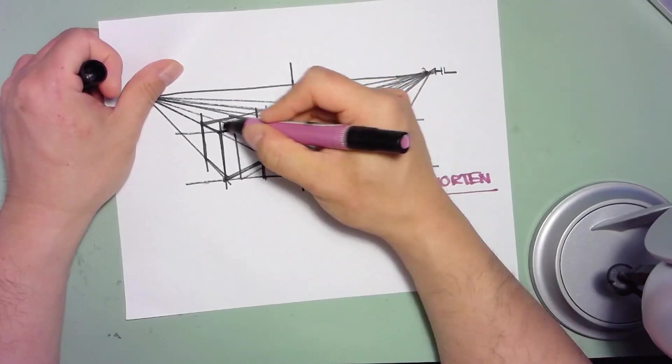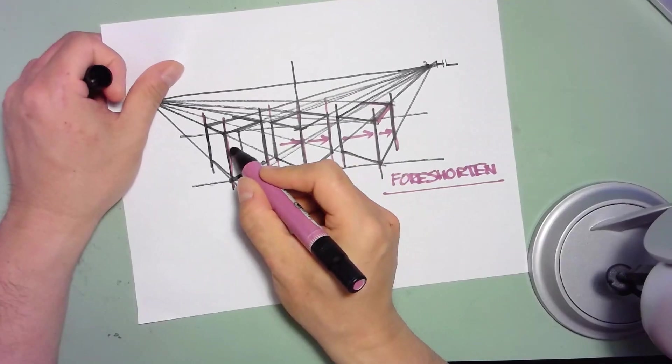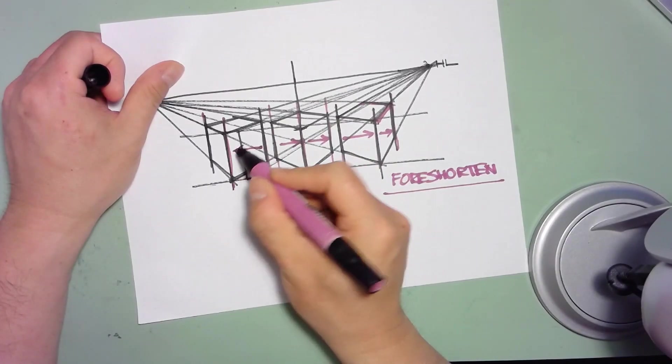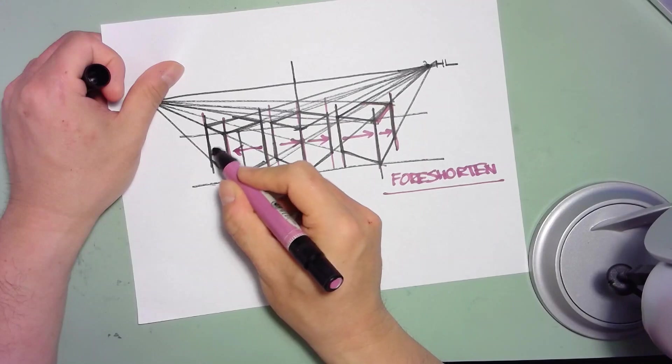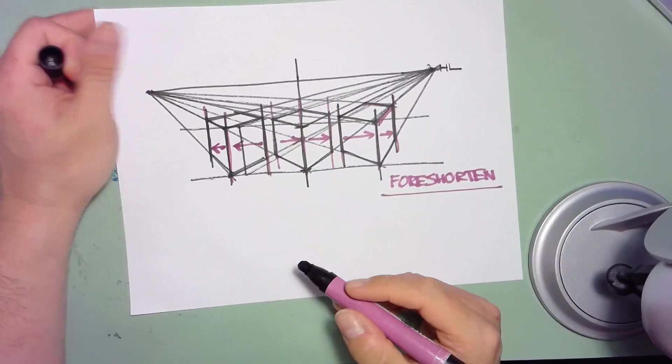Likewise, on the left side, you'll notice the opposite happening where the distance from here to here is greater than the distance from here to here. It becomes an inverse when you go to the left side.